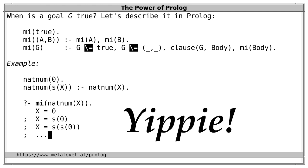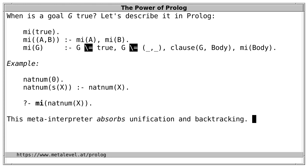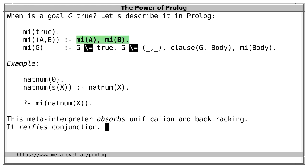The meta-interpreter interprets the program in exactly the same way as Prolog itself would do it — we get the exact same results as if we posted natNum(X) alone. That's our first meta-interpreter, also known as the vanilla meta-interpreter. This meta-interpreter absorbs unification and backtracking through 'clause', because on backtracking, clause yields all suitable clause bodies and also implicitly unifies the given goal G with the clause head. The meta-interpreter reifies conjunction — we state what a conjunction means — and reification is the starting point for observation and changes of these features.